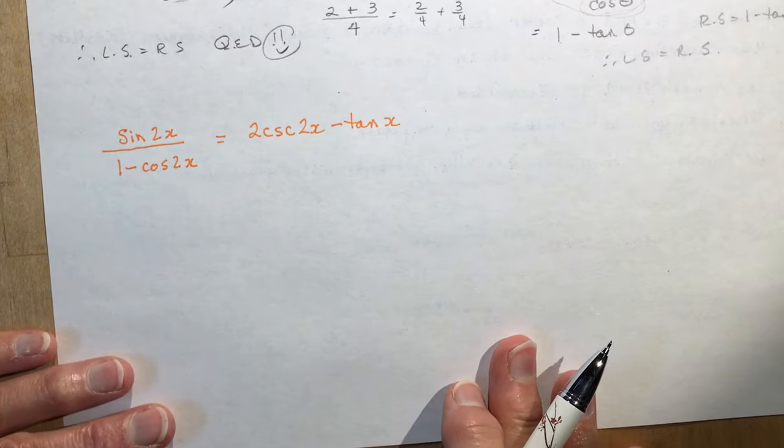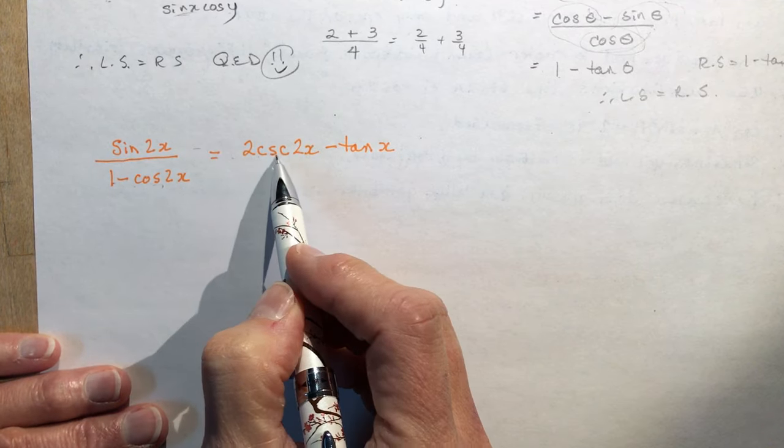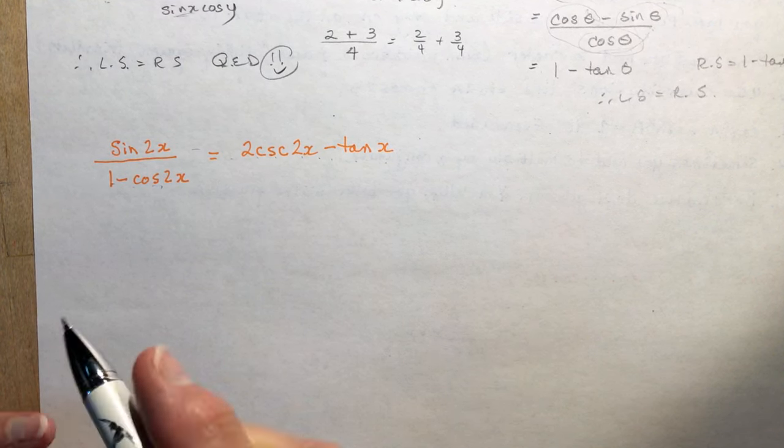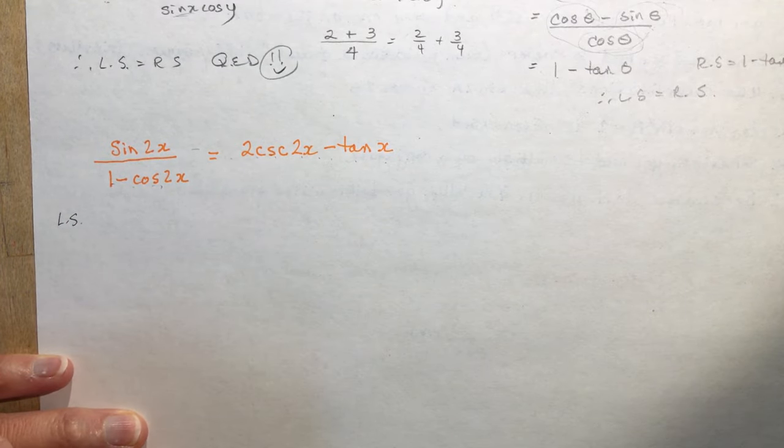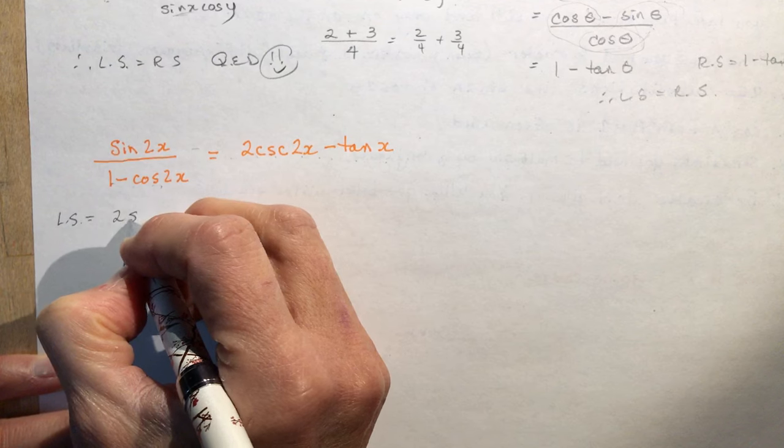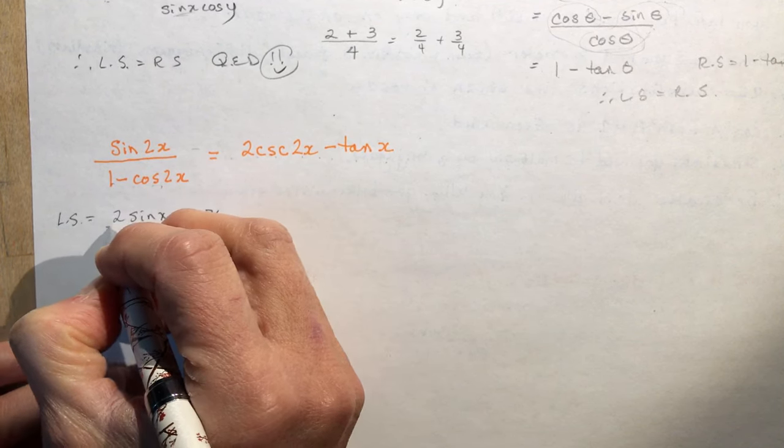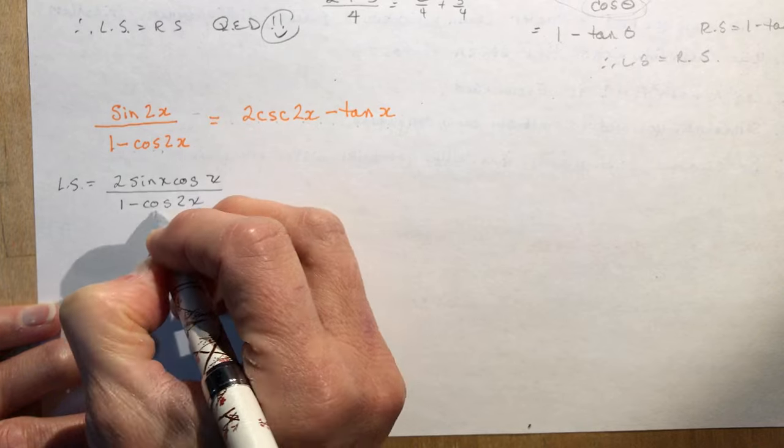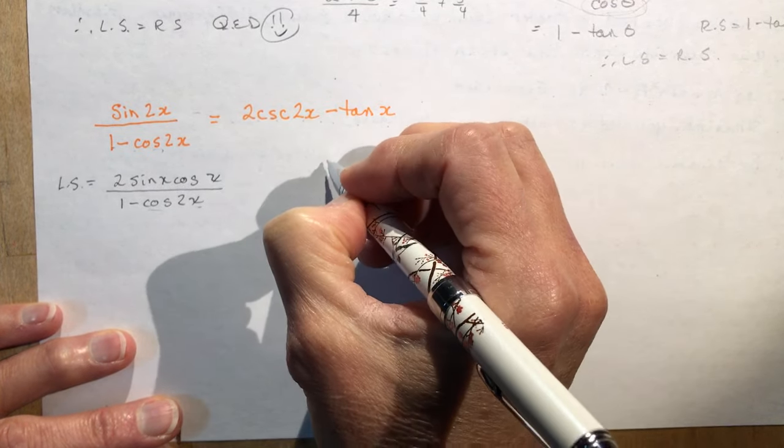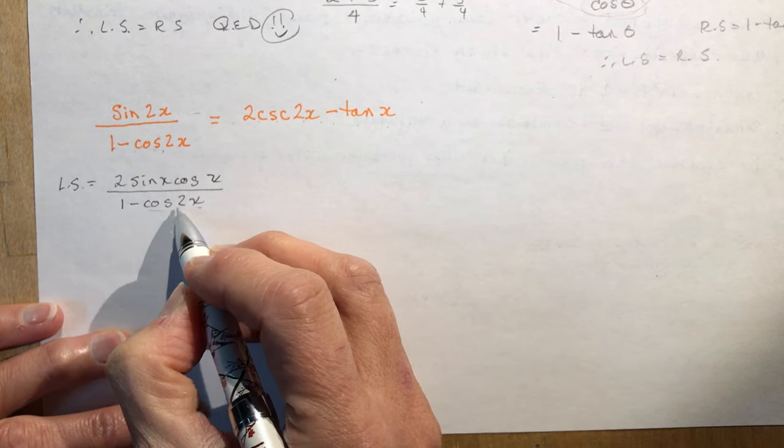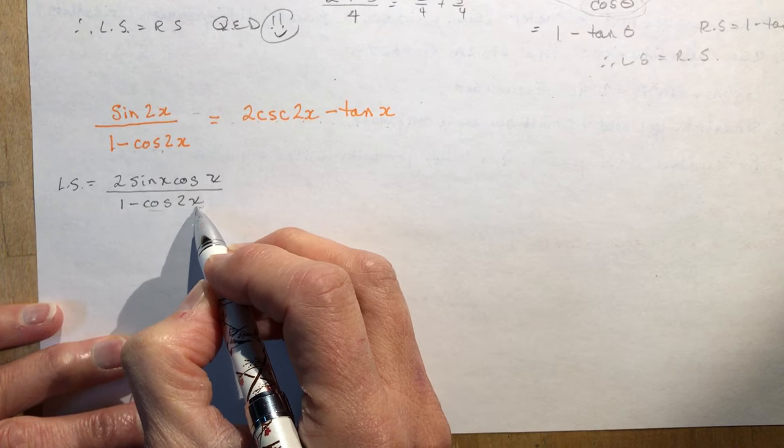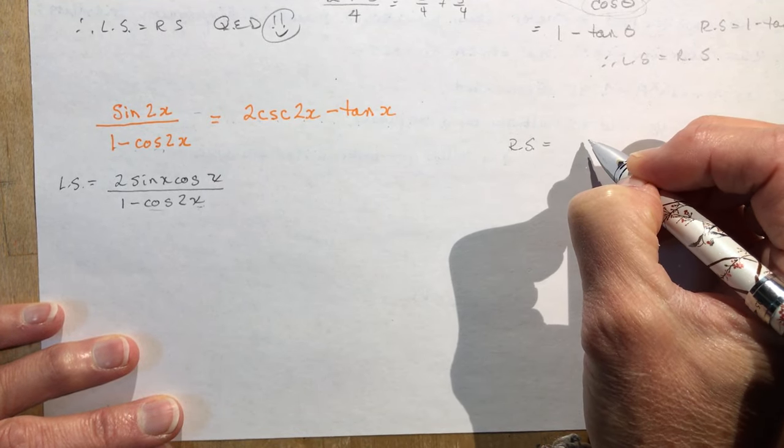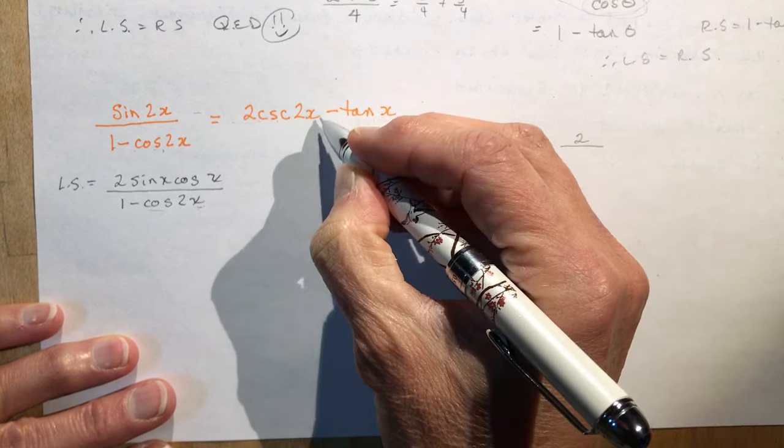Okay, last one. sin 2x / (1 - cos 2x) = 2 cosec 2x - tan x. Oh, that one looks really complicated, doesn't it? Okay, so let's see what can we do with the left side. Left side, sine of 2x. Well, the sine of 2x is 2 sin x cos x. And I'm all over 1 - cos 2x. I'm going to write that down here anyway even though I know I'm going to want to change this cos of 2x. Let's go to the right side just to see what kind of denominator I want, because as you know the cos of 2x has three possible equations that I can substitute in here.